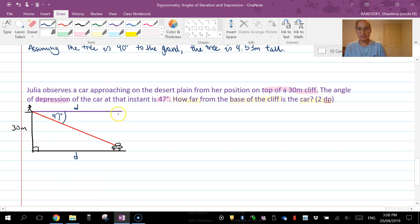Right angle, and then this is 30 meters which means that this here is 30 meters as well. Right angle, so then we've got enough information and we've got a right angle triangle to work out the distance of the base of the cliff to the car.